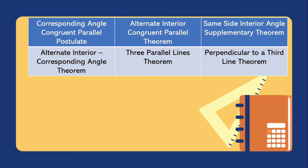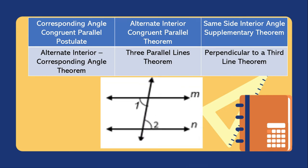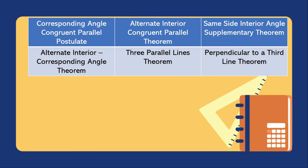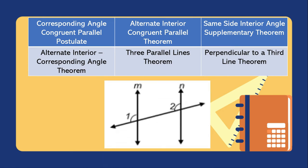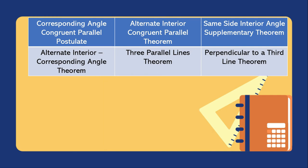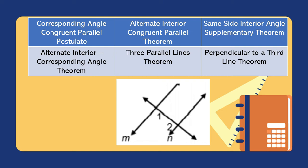Now let's look at different figures and identify which theorem or postulate is being used. In the first example, angle 1 and angle 2 are alternate interior angles, so the theorem used is the alternate interior congruent parallel theorem. In the second example, angle 1 and angle 2 are corresponding angles, so we use the corresponding angle congruent parallel postulate. In the third example, angle 1 and angle 2 are same side interior angles, so the theorem used is the same side interior angle supplementary theorem.